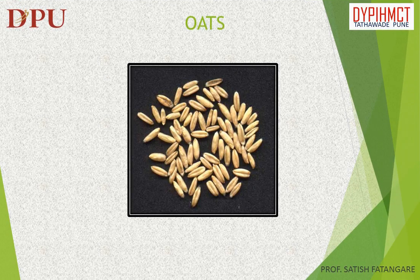In this slide we will discuss about oats. Oats is a species of cereal grain grown for its seed, which is known by the same name. It contains soluble fiber and antioxidants which lower bad cholesterol and the risk of type 2 diabetes.